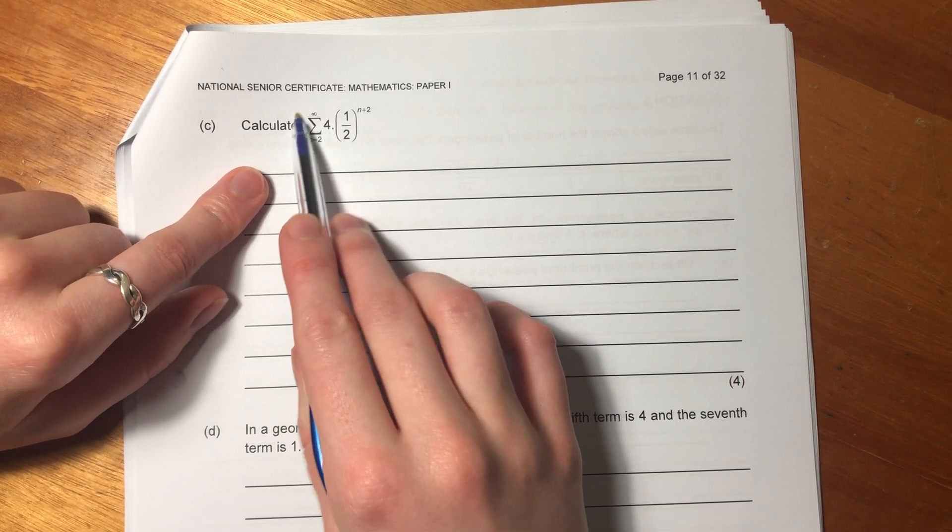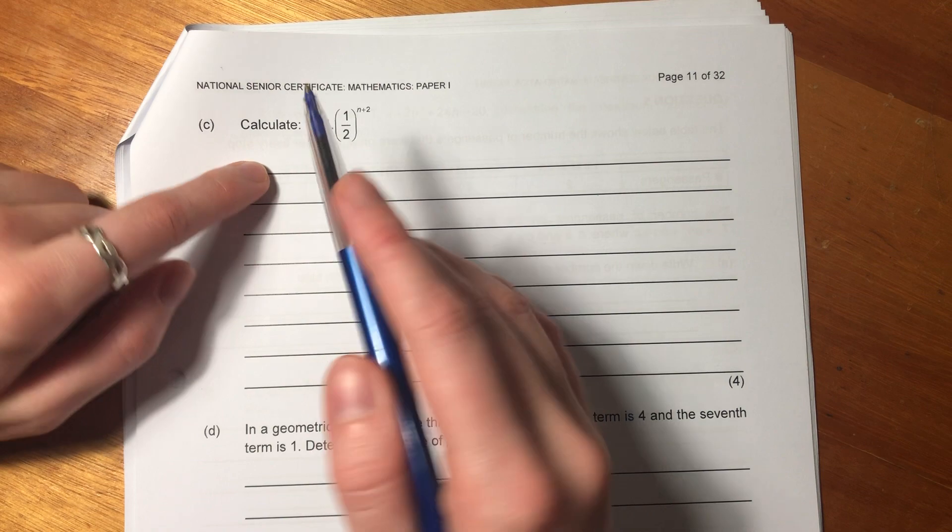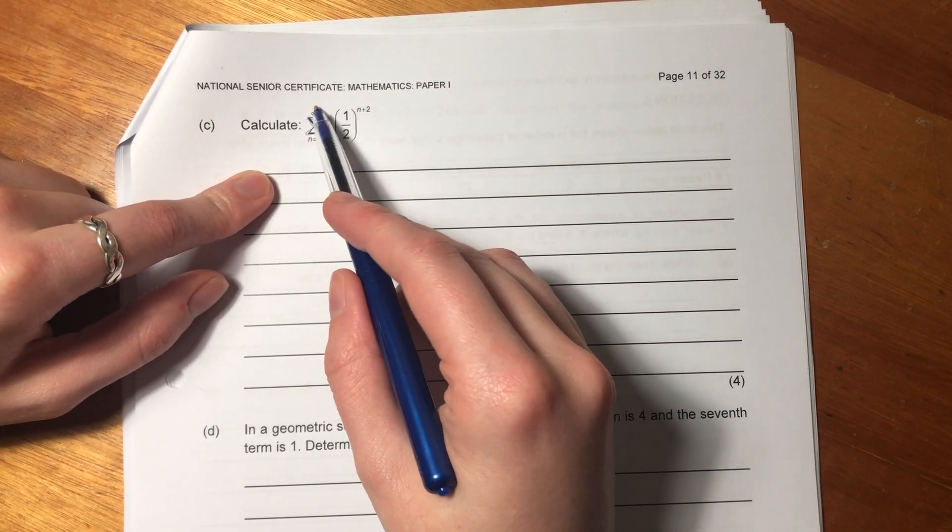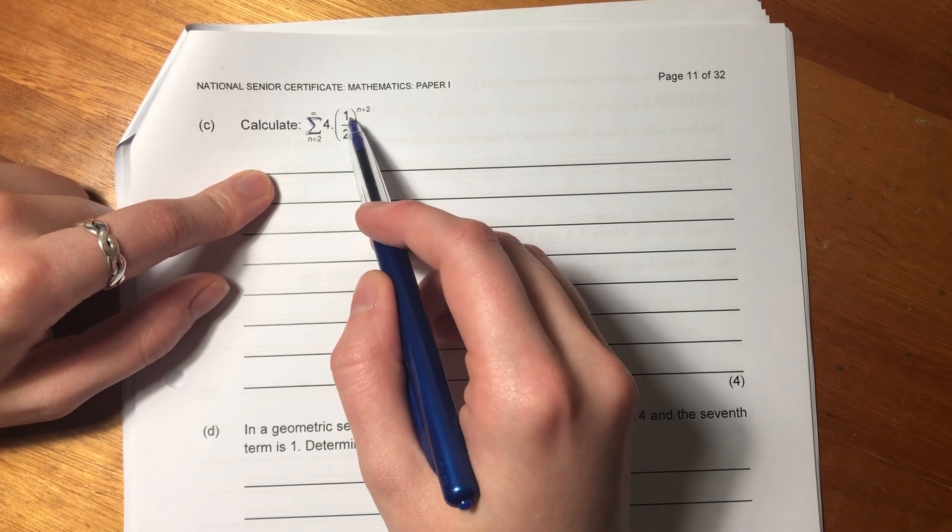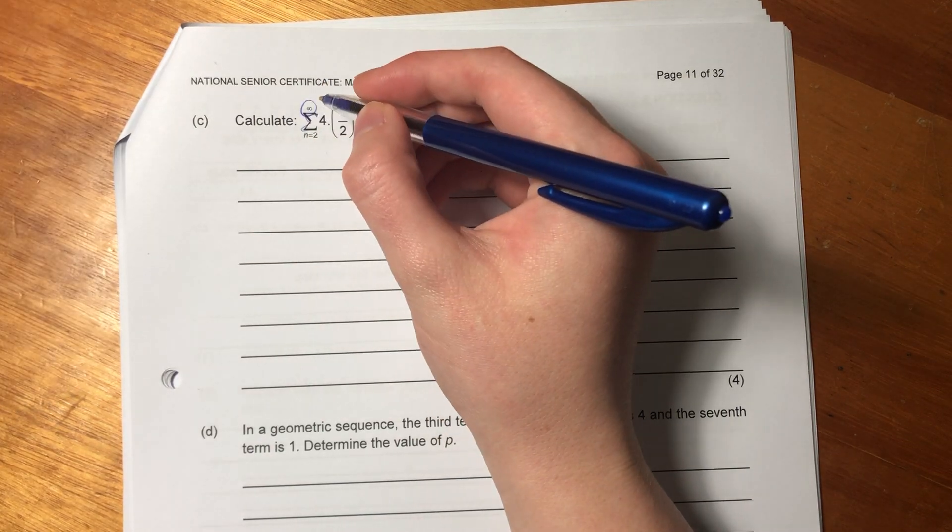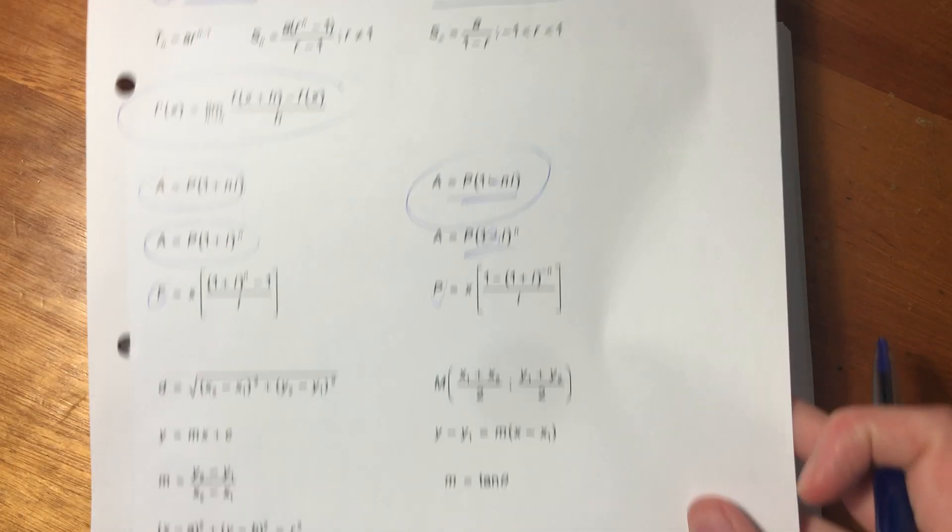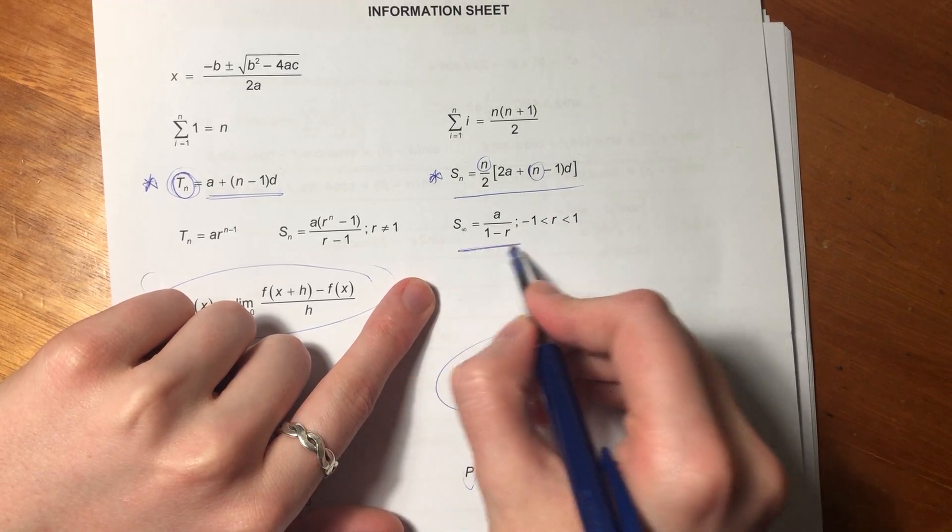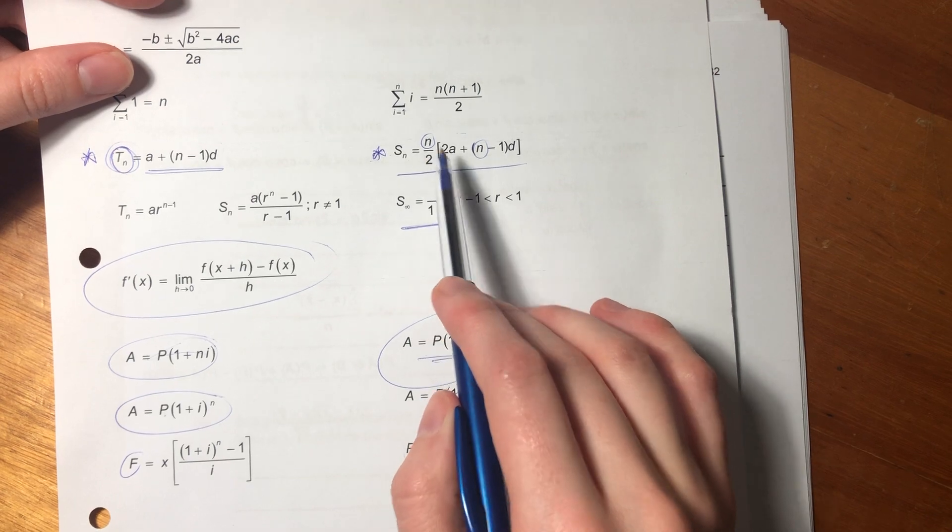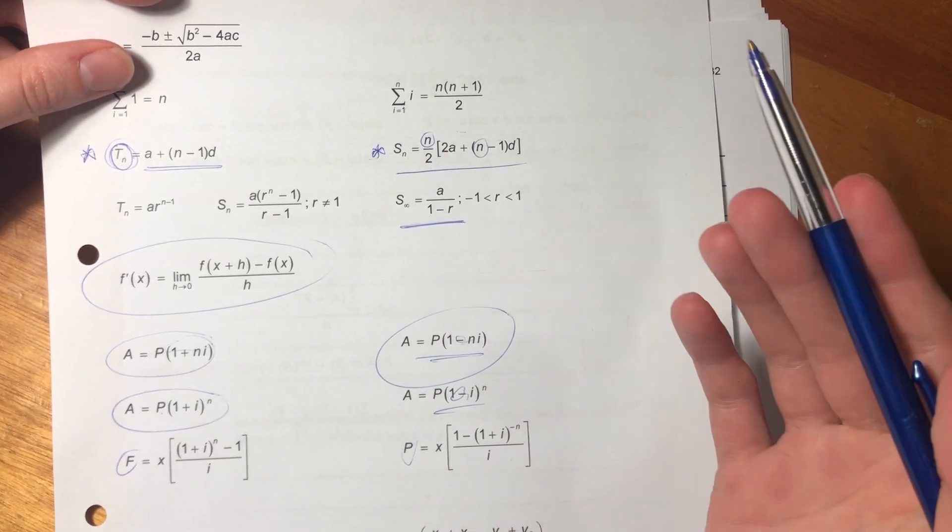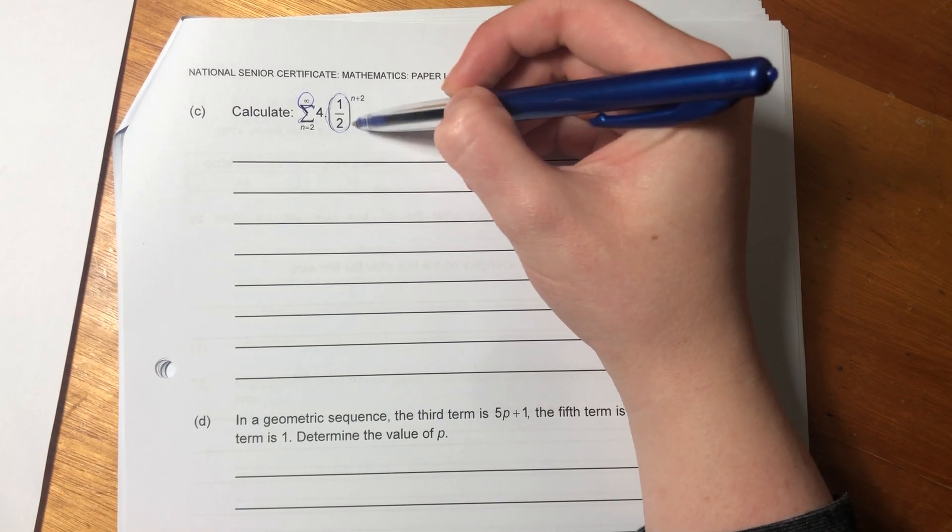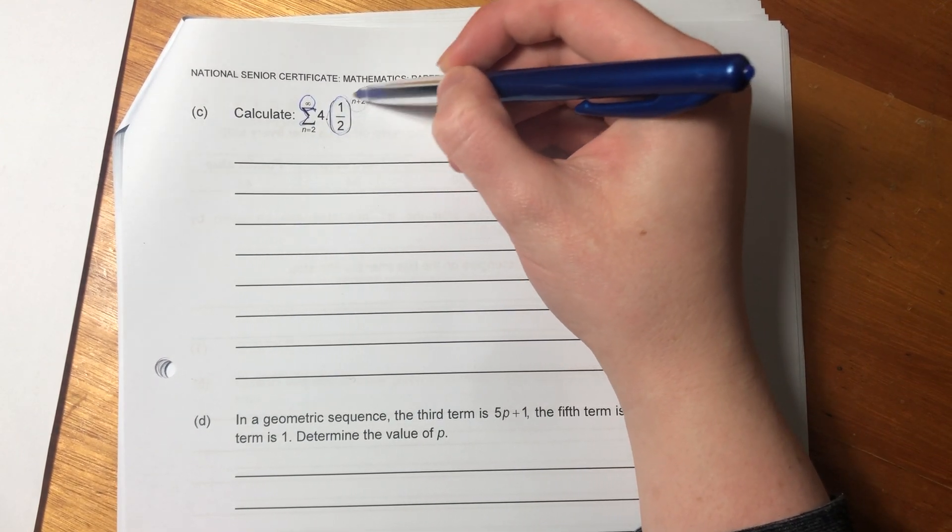It says calculate. This is sigma notation. You can say what's sigma? This little sign here. This little e is sigma of n equals 2 to infinity for 1 over 2 n plus 2. When you're seeing things with infinity, you should be thinking about this formula here. And you could be saying, oh, what about like an arithmetic sequence? You could be thinking, well, how do I know what sort of sequence it is? Well, we see that there's a common ratio. Do you see that? Because every single term is multiplied by 1 over 2.